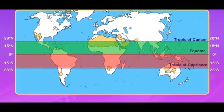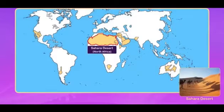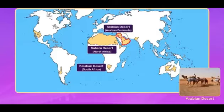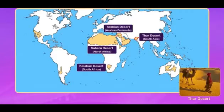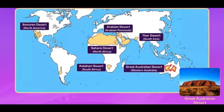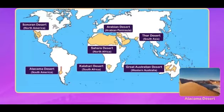The main deserts are: the Sahara Desert in North Africa, the Kalahari Desert in South Africa, the Arabian Desert in the Arabian Peninsula, the Thar Desert in South Asia, the Sonoran Desert in North America, the Great Australian Desert in Western Australia, and the Atacama Desert in South America.